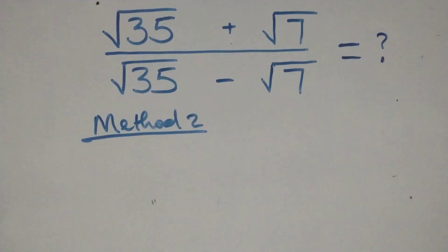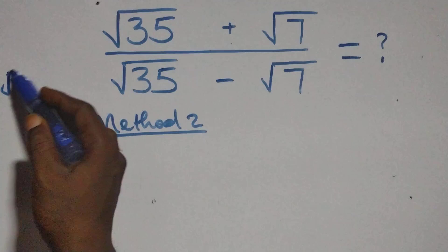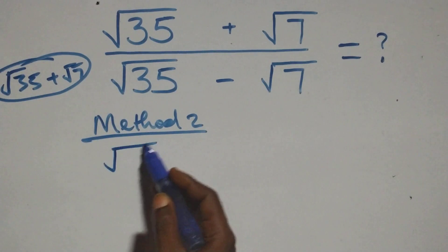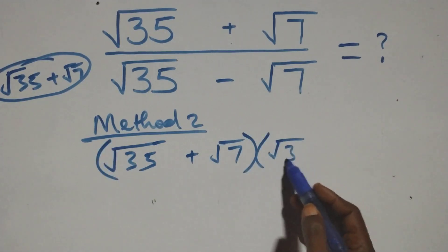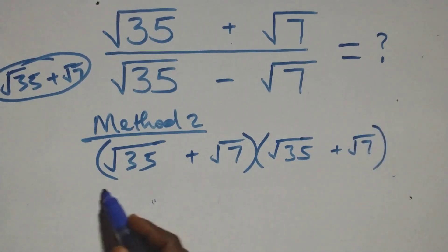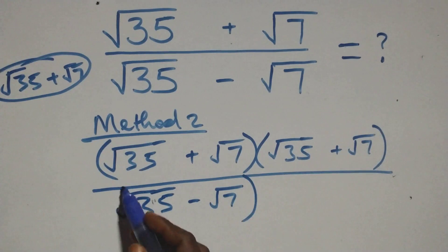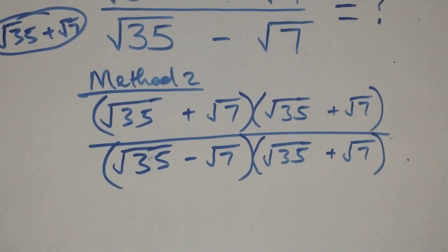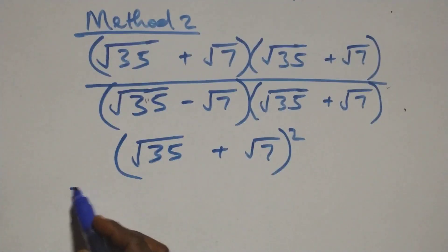Now let's use the second method. In this method, we rationalize directly by multiplying the numerator and denominator by the conjugate, which is root 35 plus root 7. We multiply both numerator and denominator by (root 35 plus root 7), giving us (root 35 plus root 7) squared in the numerator, divided by (root 35 minus root 7)(root 35 plus root 7).